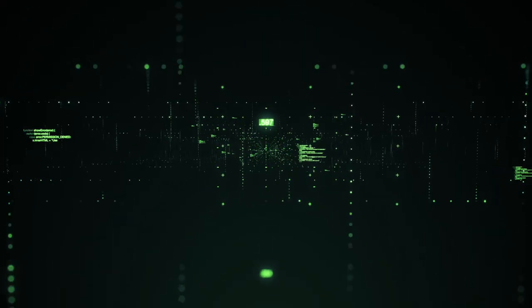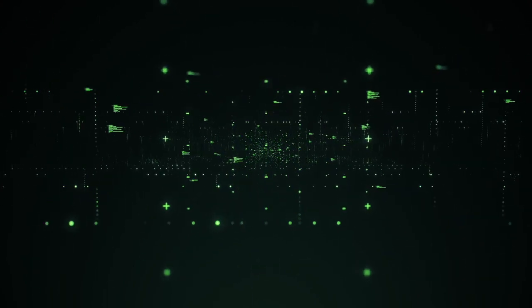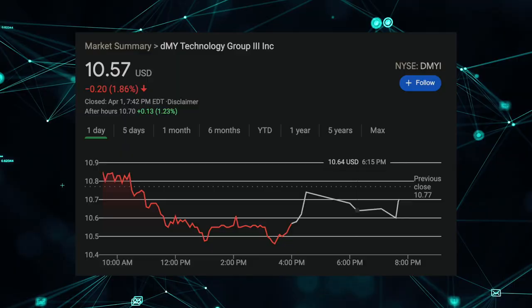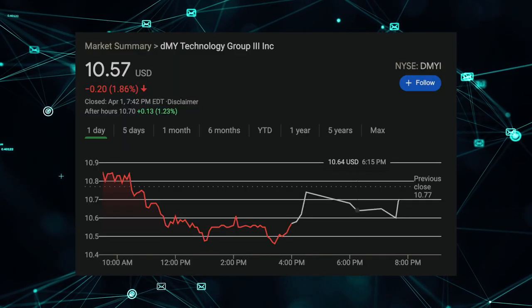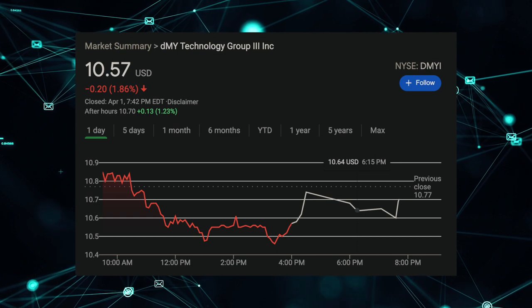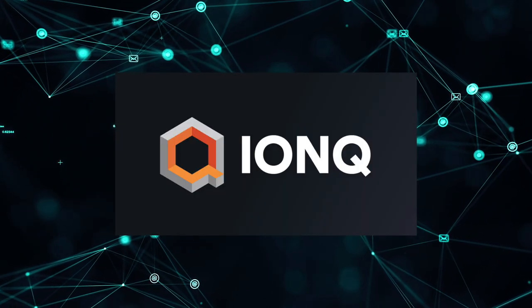In fact, the stock I'm going to go over is the very first publicly traded quantum computing company on the stock market. So let's get into this. The ticker symbol is DMYI. This is a SPAC that is merging with the company IonQ, the quantum computing company.